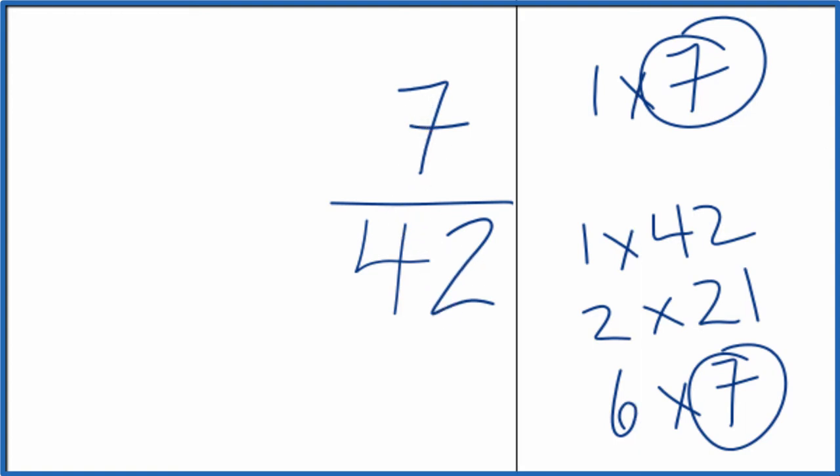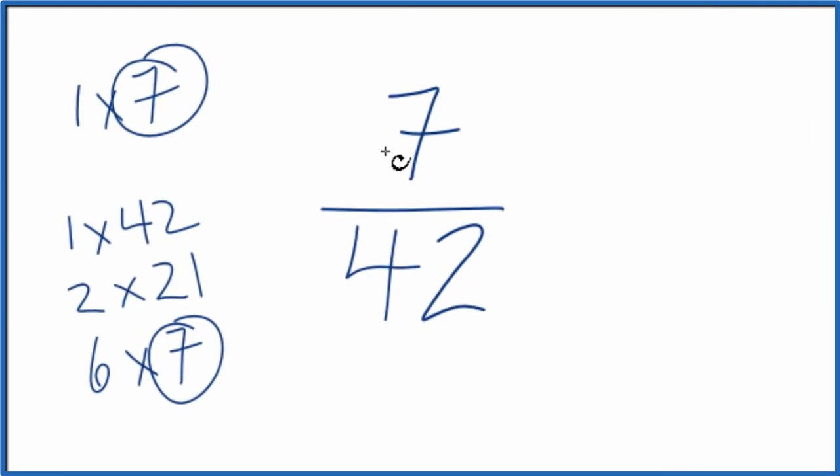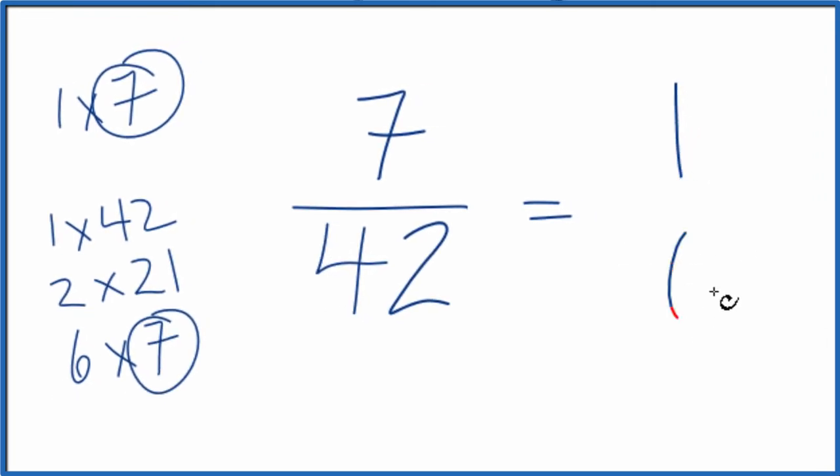Let's move these over here. So 7 divided by 7, that gives us 1. And 42 divided by 7, that gives us 6.